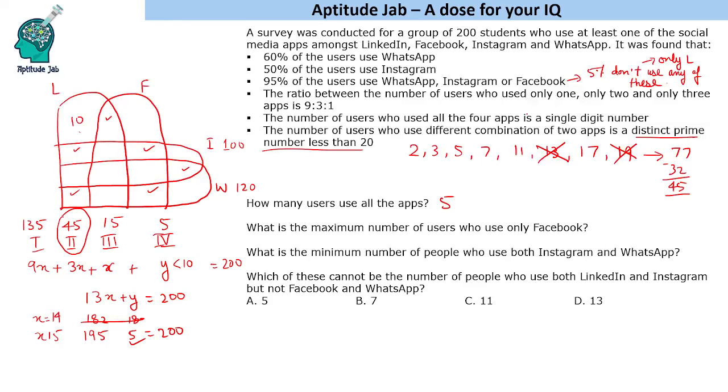One of the questions is which of these cannot be the number of people who use both LinkedIn and Instagram but not Facebook and WhatsApp. They are asking about this region. Now this region can be any of these values, but definitely it will not be 13 because we have ruled out the possibility of 13 as being one of these numbers. So we have done two of these questions.